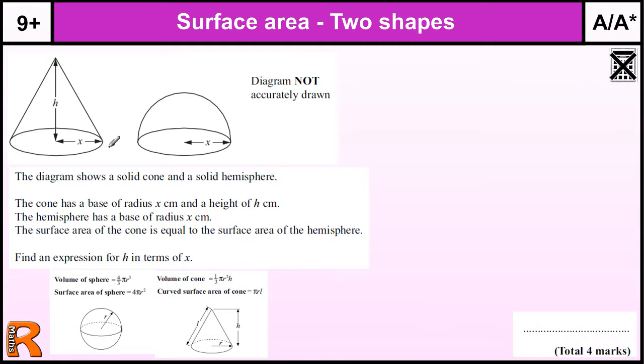Now, the curved surface area of the cone is this formula here, pi RL. So we've got the cone, it's pi times R times L, where L is this long side. So we're going to have to work that out in a minute, where R is X. So we've got pi XL. Now, we should include the base of this cone, which is pi R squared. But because the base of this hemisphere is exactly the same, pi R squared, we can pretty much ignore that. We're just going to compare the surface areas.